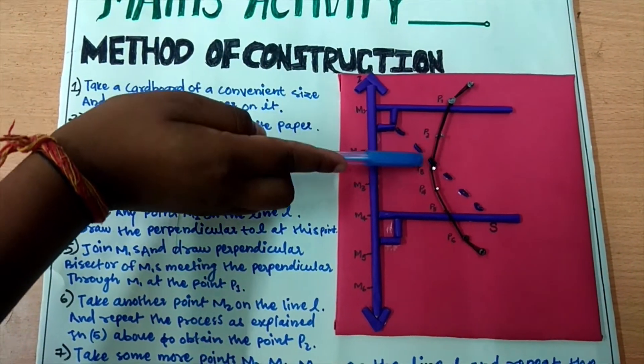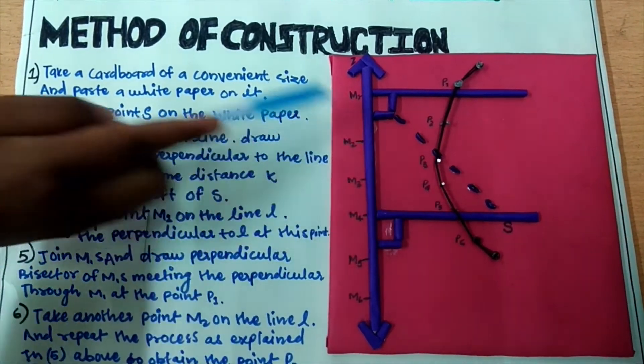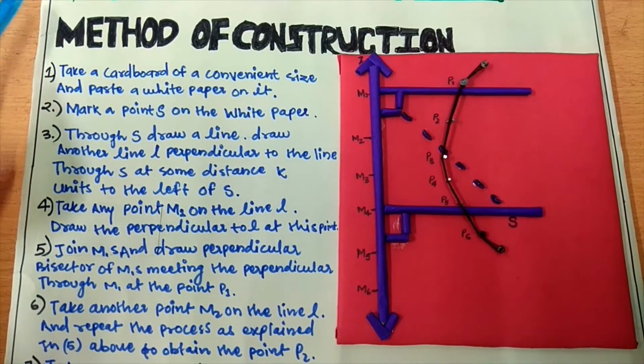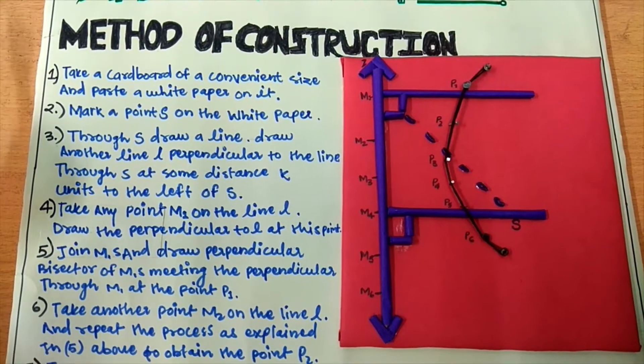The points P1, P2, P3 and so on are such that the distance of each point from the fixed point S is equal to the distance of that point from the line L. So the freehand curve drawn through these points is a parabola with focus S and directrix L.